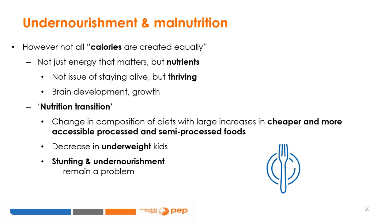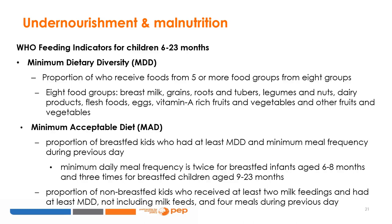Additionally, it is important to acknowledge that not all calories are created equally — it is not just energy that matters, but nutrients. It is not an issue of staying alive, but thriving. Nutrients are essential for brain development and growth. The nutrition transition has changed nutrition problems and priorities because it changed the composition of diets, with large increases in cheaper and accessible processed and semi-processed foods. This has led to a decrease in underweight kids, but stunting and undernourishment remain a problem.